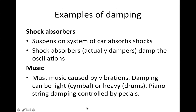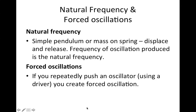So that's damping: light, heavy, critical. All our examples so far have involved a pendulum that we displace, release, and away it swings - that's known as the natural frequency. For a pendulum, that depends on the local value of gravity and the length of the pendulum. For a mass on a spring, it would depend on the value of the mass and how stiff the spring was.